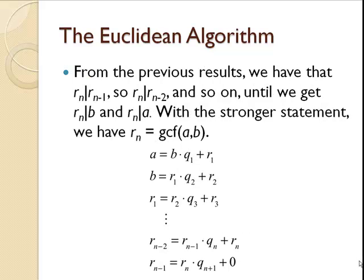And from the previous results we have, we have that these remainders divide each other, and with the stronger statement we have that rn, that last non-zero remainder, is the greatest common factor of a and b.